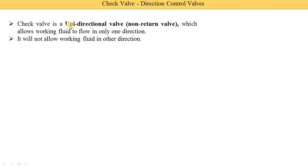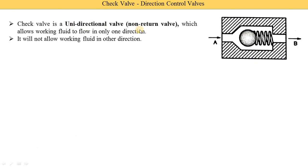Here you can see the diagram of the check valve. This is inlet A and this is outlet B, as indicated by the arrows. Now let's see what are the various components of the check valve.